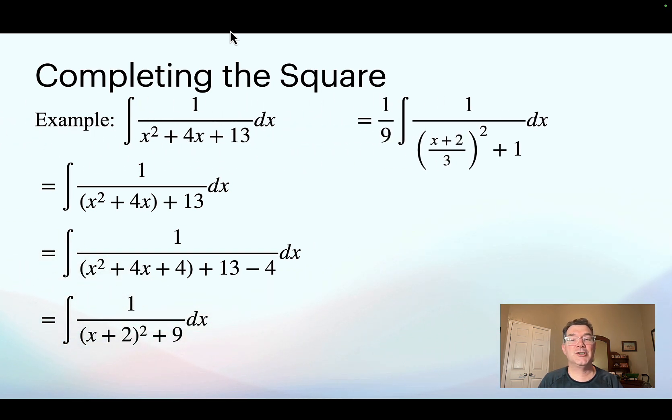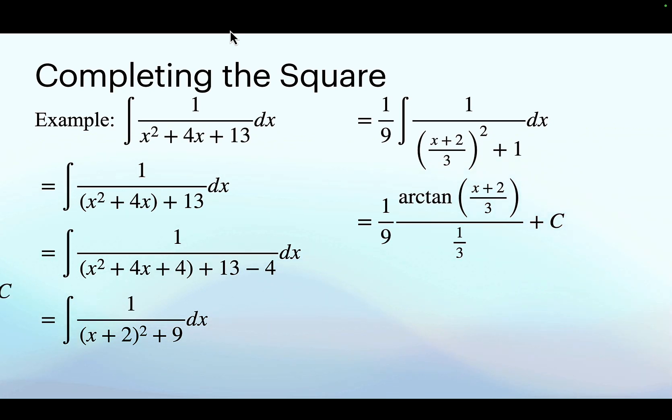All right. And because there's a 1 in my formula for the derivative of arctan, then I need to change that 9 into a 1. And to do that, I'm going to pull out a 1 ninth. And that means I've got 1 over x plus 2 over 3 all squared plus 1 still inside the integral. And so the antiderivative of that is going to be arctan x plus 2 over 3 over 1 third, keeping the 1 ninth in front. A little bit of algebra makes it look a little nicer, but that's the answer to that: 1 third arctan x plus 2 over 3 plus c.